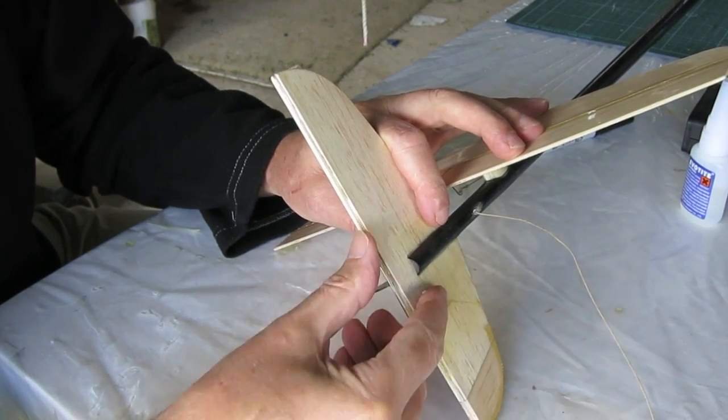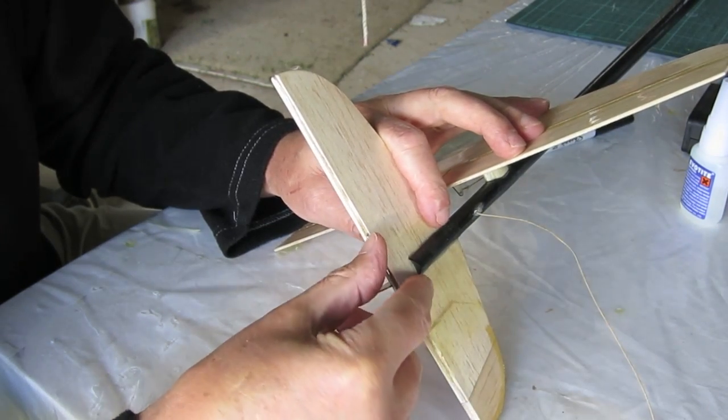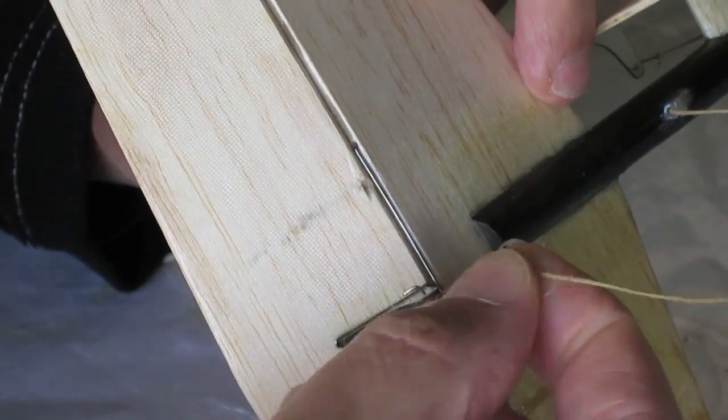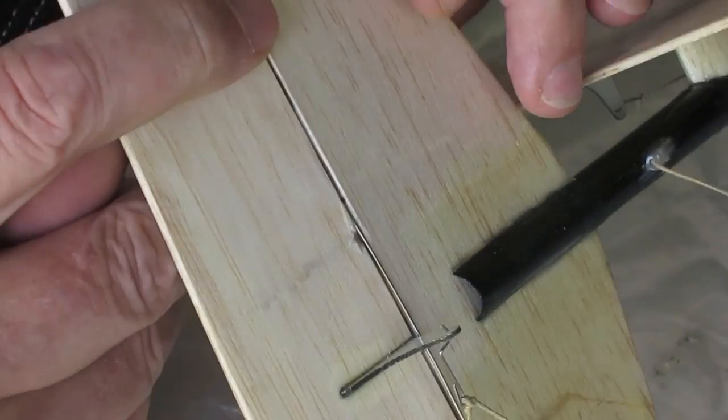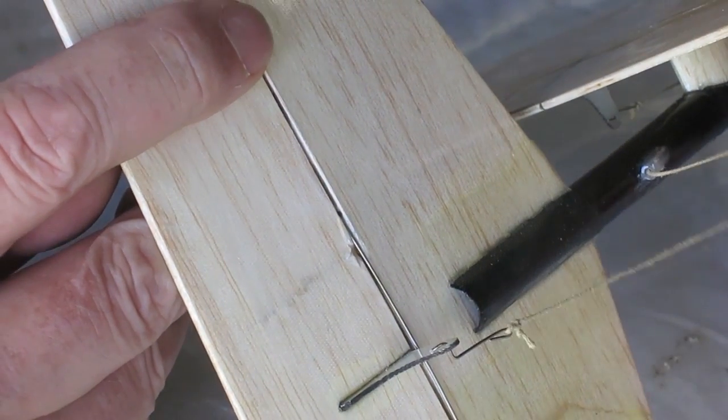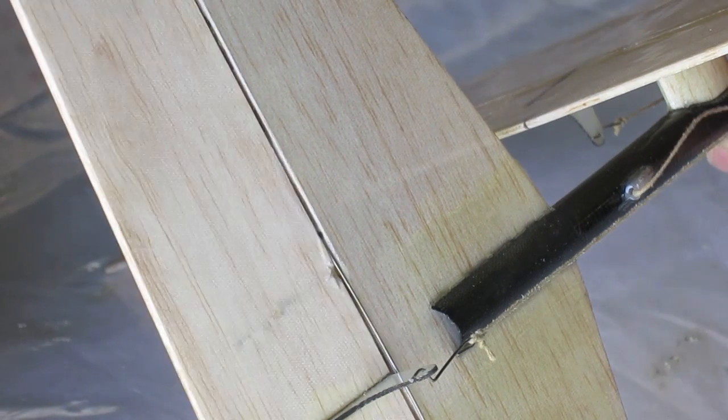Putting the spring back in and attaching the pull line which is Kevlar kite line. That seems to be working okay.